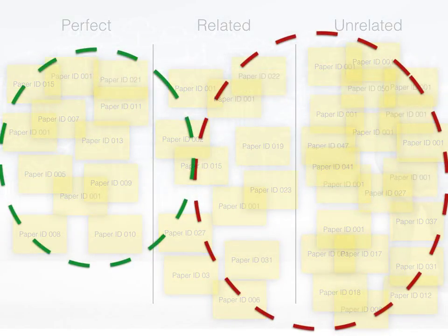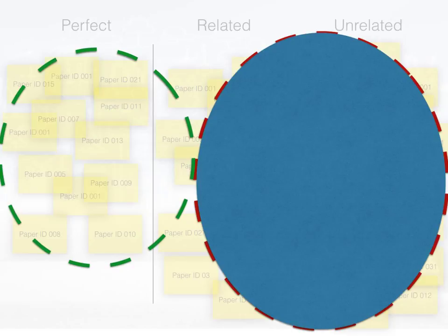Typically, the perfect category and some of the related category make it into the literature review, the final document. The work undertaken to evaluate the other papers is typically lost, and not seen by either the supervisor or an examiner.